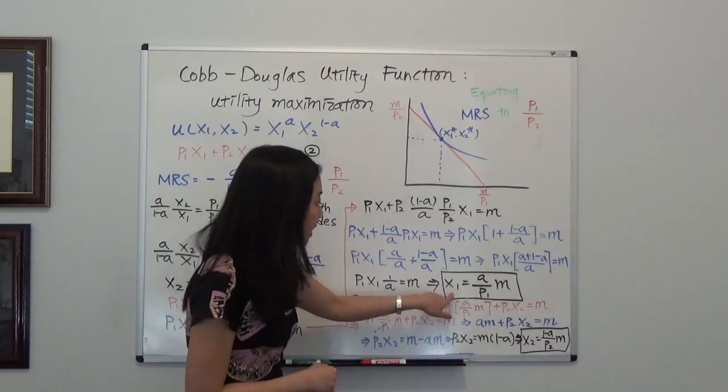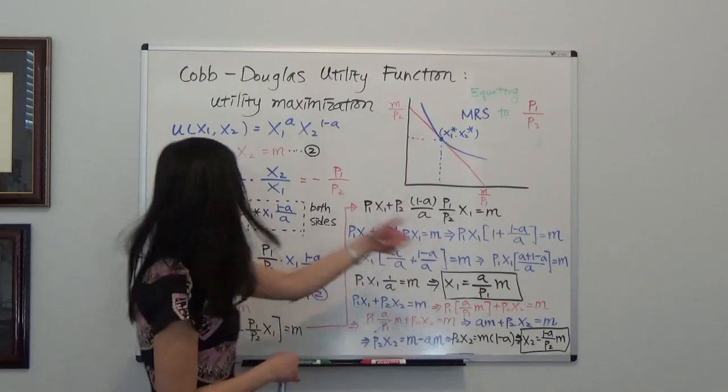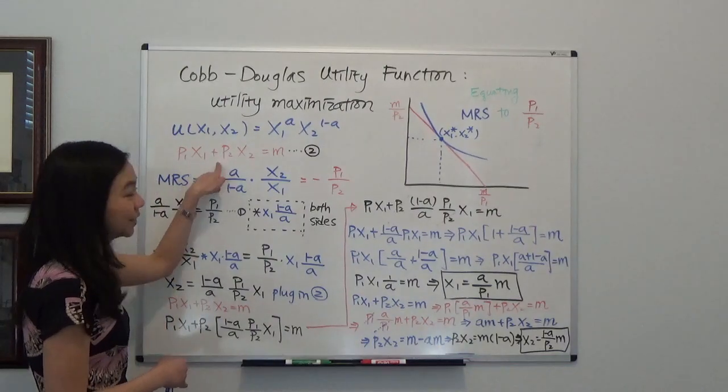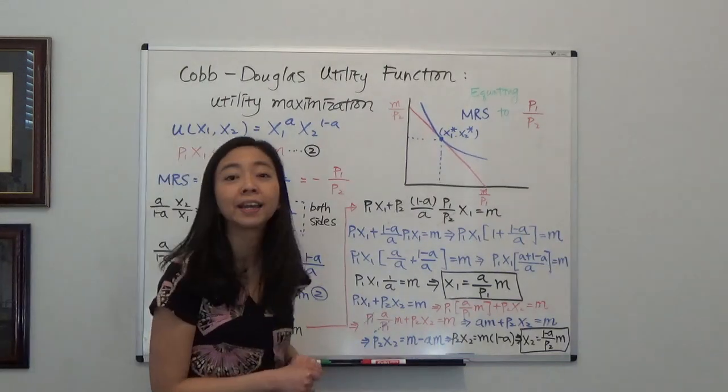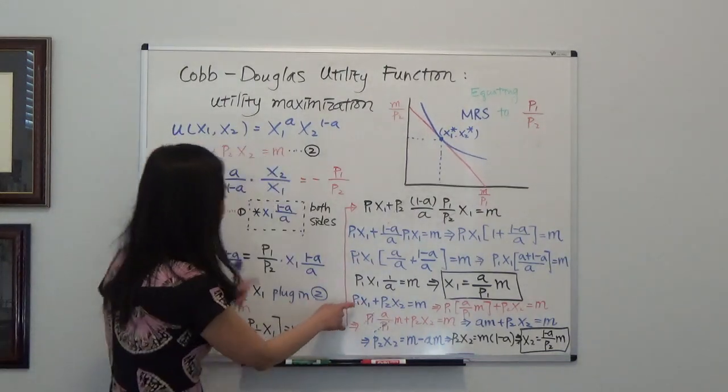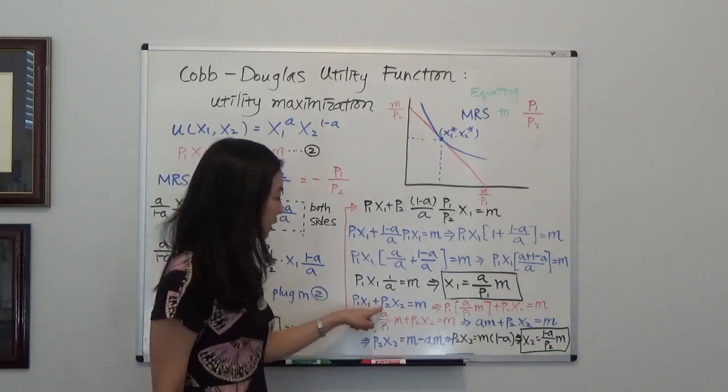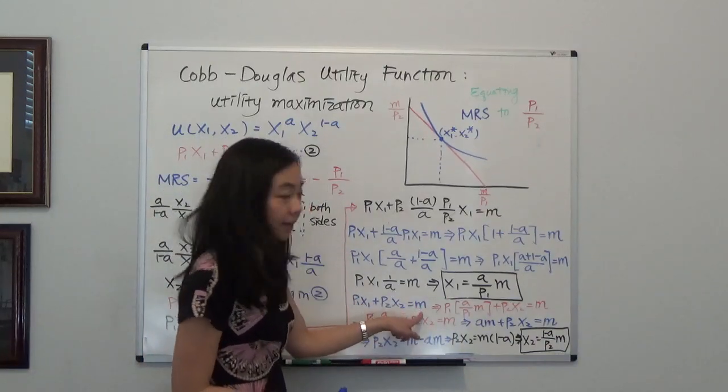And after that, I can go back and plug this back to our budget constraint, which is here. Then I will be able to find x2. So again, I'm using the budget constraint p1x1 plus p2x2 is equal to m.